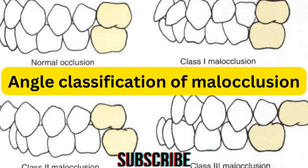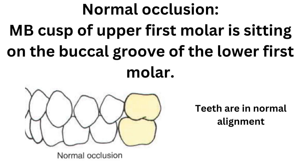But before we continue, make sure to press the subscribe button down below because it would really help me to do more and more videos. Starting with the normal occlusion, in which the mesiobuccal cusp of the upper first molar is sitting on the buccal groove of the lower first molar.